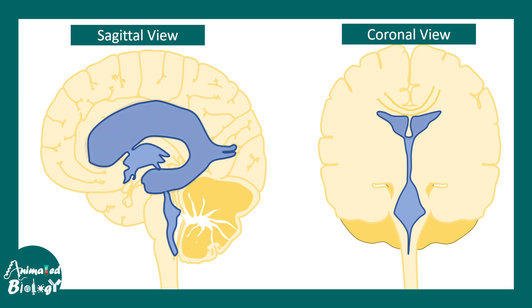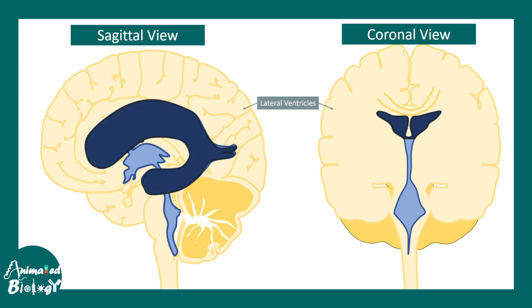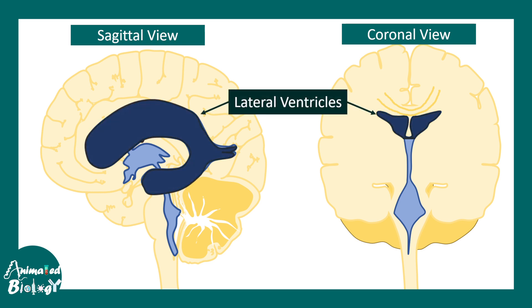The first we'll talk about are the lateral ventricles. These ventricles are the biggest ventricles in the entire brain. There are two lateral ventricles — right and left — and these are situated just below the corpus callosum tract.